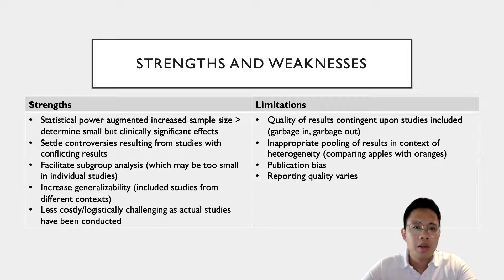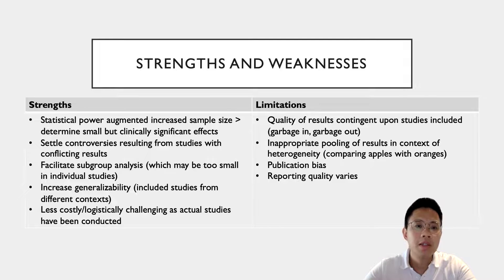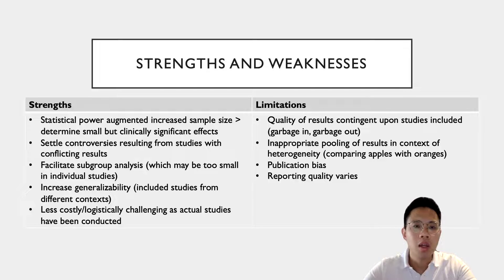The main strengths of systematic review and meta-analysis come from the fact that we are taking different studies and putting them together and looking at them as a single entity. This augments the power, ultimately increasing the sample size, and potentially could settle controversies that result from conflicting results from different studies. It also facilitates subgroup analysis because oftentimes when we look at standalone studies, the number of participants in different subgroups may be too few. It increases generalizability because when we take different studies from different contexts, the totality of patients comes from different contexts and hence the results may be more generalizable.